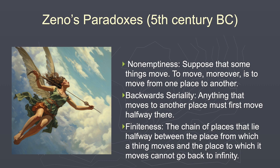Here's how we could put Zeno's argument in that form. First, non-emptiness: suppose that some things move — to move is to go from one place to another. Then we adopt the principle of backward seriality: anything that moves to another place must first move halfway there. And then the finitude claim: the chain of places that lie halfway between the place from which a thing moves and the place to which it moves can't go back to infinity. Well, from the point of view of modern physics, that's the problem — yes, it can go back to infinity. You can divide time and space infinitely far. But if you couldn't, if there really was no possibility of an infinite chain, then Zeno would be right.